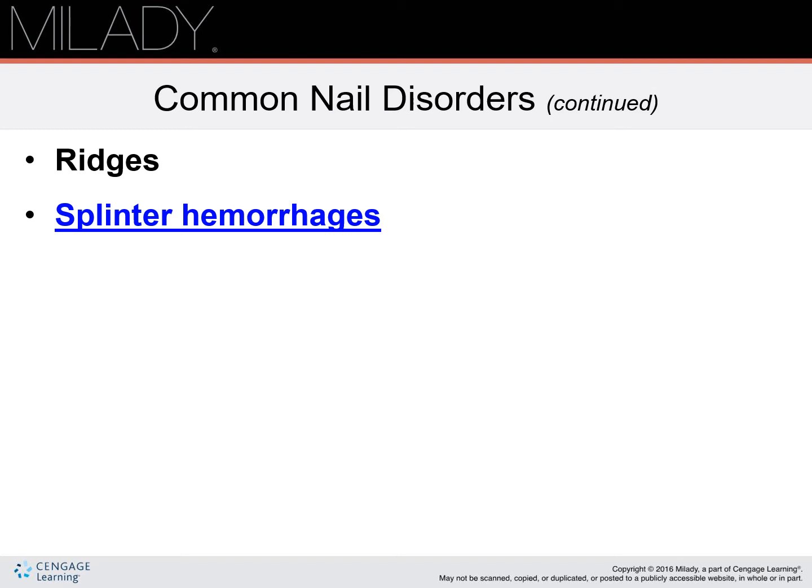Next, we have splinter hemorrhage. This is caused by physical trauma or injury to the nail bed that damages the capillaries and allows small amounts of blood flow. This blood oxidizes and turns brown or black, giving the appearance of a small splinter underneath the nail plate. These are normal and usually associated with some types of heart impact or other physical trauma to the fingernail or toenail.